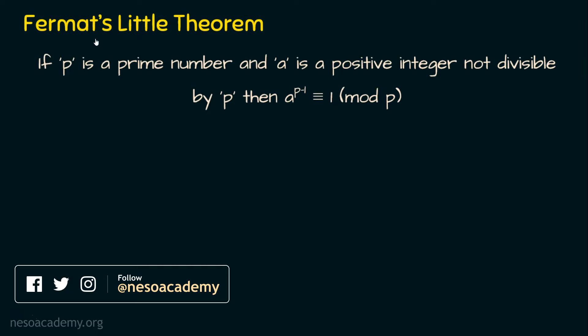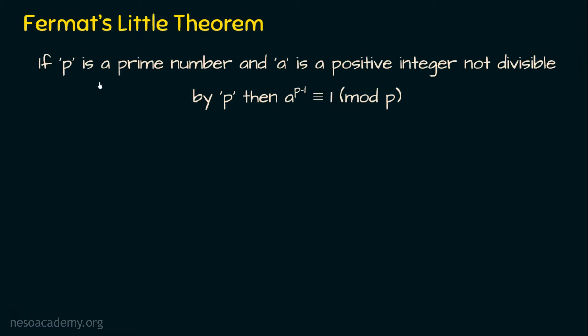If you note here, Fermat's Little Theorem states that when you take a prime number p and any positive integer a, the only condition is that a is not divisible by p. If these two conditions are met — p is a prime number and a is any positive integer not divisible by p — then a to the power p minus one is congruent to one mod p.